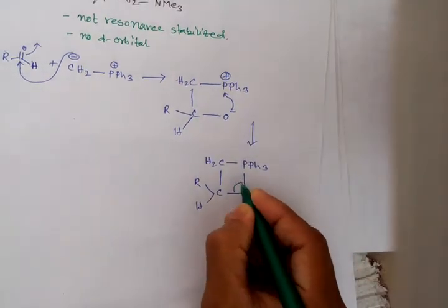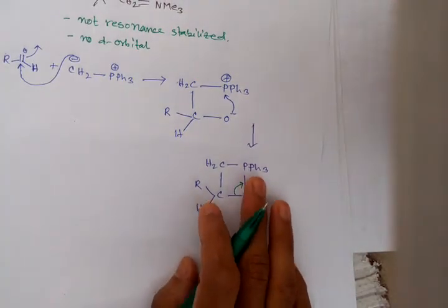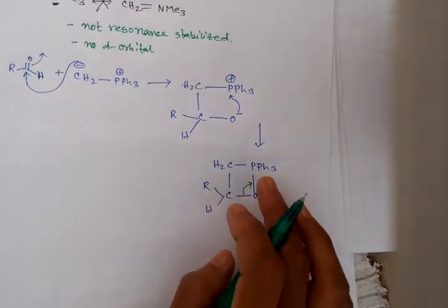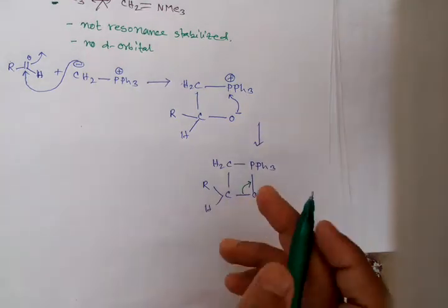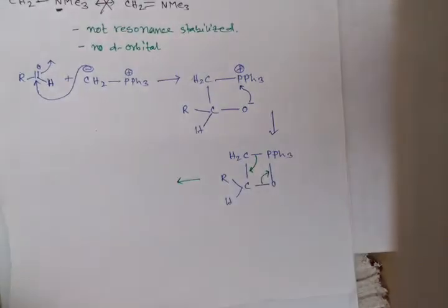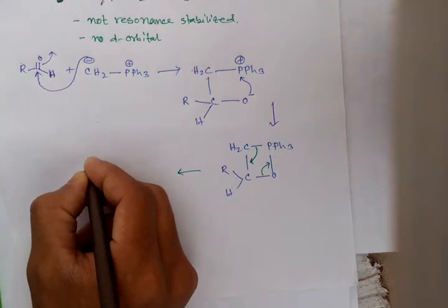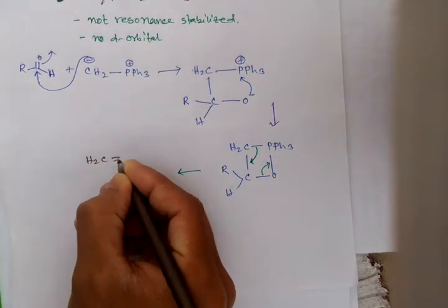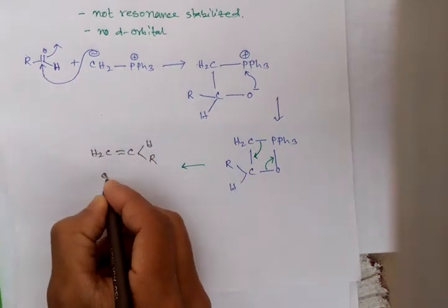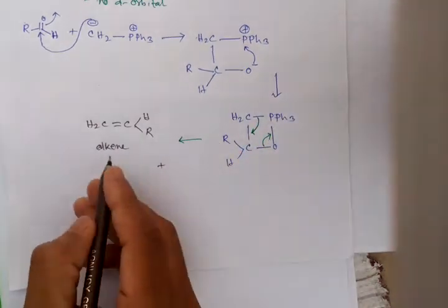This one goes here to give triphenyl phosphine oxide, and this bond comes here to give an alkene. The products are alkene and triphenyl phosphine oxide.